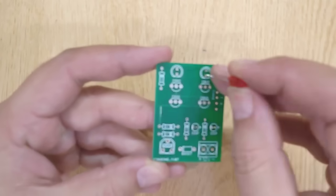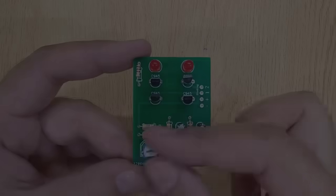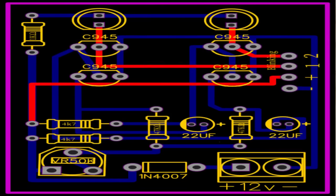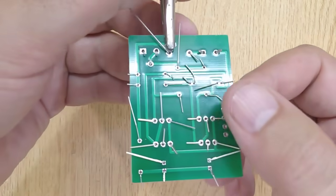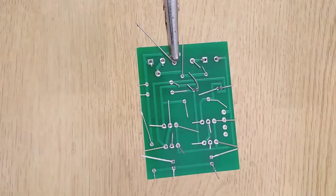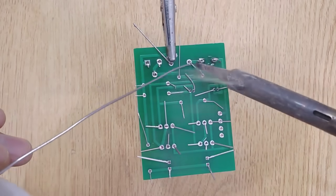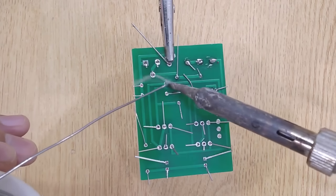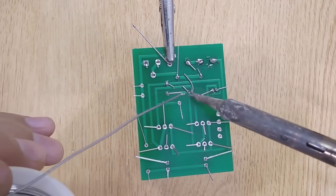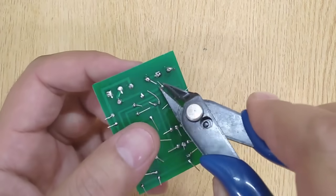Insert all the required electronic components into the PCB one by one according to the circuit diagram shown on the screen, and solder all of them. Remove the extra pins using a wire cutter.